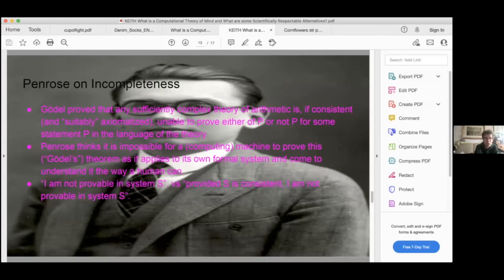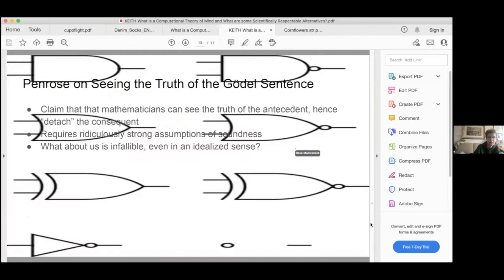Penrose thinks, therefore, that a computing machine to prove this theorem, as applies to its own formal system, and come to the end of the way a human can, is hence impossible. I am not provable in system S versus provided S is consistent, I am provable in system S, is where this falls down. Unfortunately, this is where Dennett would correct him, like all the logicians have corrected. It's amazing that you have to have mathematicians correct a fellow mathematician here. The theorem is not what Douglas Hofstadter says, it's not I am not provable in system S. It says, provided S is consistent, I am not provable in S. And that's a big assumption.